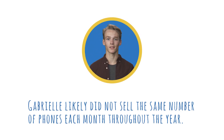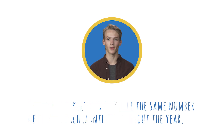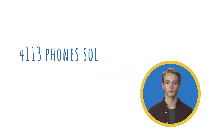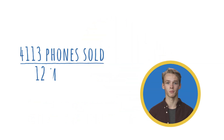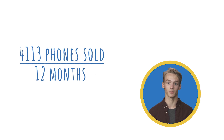Second: Gabrielle likely did not sell the same number of phones each month throughout the year. In the question, we calculated a monthly average by dividing 4,113 by 12. This calculation is based on the assumption that Gabrielle sold the same number of phones each month. Disagreeing with this assumption is valid — Gabrielle could have sold fewer phones in April — so I'll select this one.